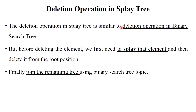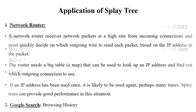Deletion operation in splay tree: you need to delete the element placed at the root position. Deletion operation of splay tree is similar to deletion in binary search tree, but before deleting an element we first need to splay the element to be deleted to the root position. After rotation, the deleted node is placed at the root, then delete it, and finally join the remaining tree using binary search tree logic.